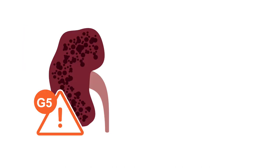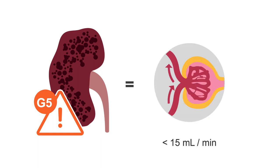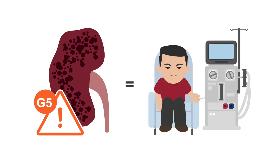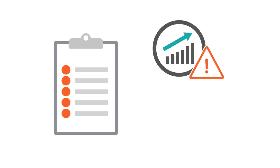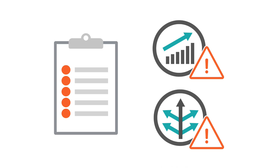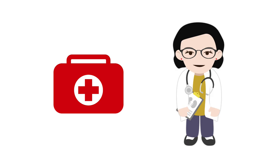End-stage renal disease or end-stage renal failure is present if the GFR is below 15 ml per minute or if the patient requires dialysis. The purpose of chronic kidney disease staging is to guide management, including stratification of risk of disease progression and risk of complications. Risk stratification is used to decide on appropriate treatments and determine the intensity of monitoring.